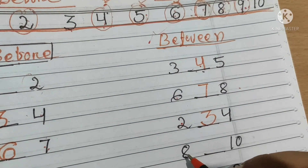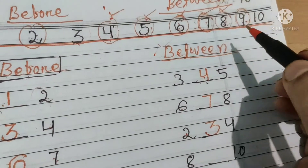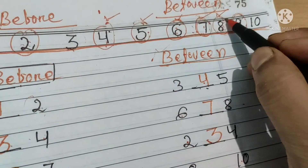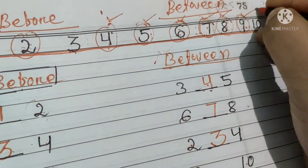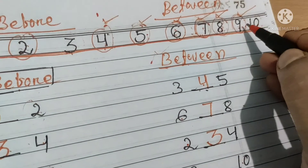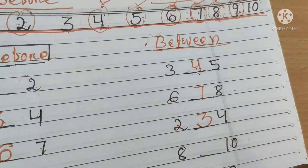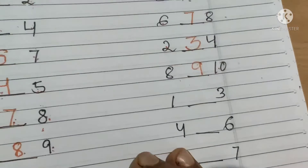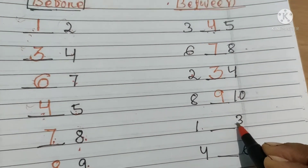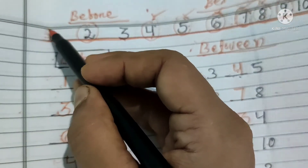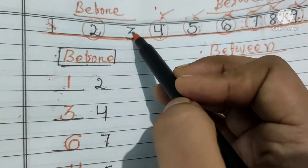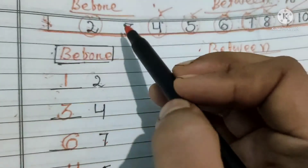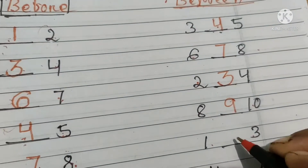Next one comes eight and ten. Chalou number line mein dekhte hain. Eight and ten. What comes between eight and ten? Number nine comes between eight and ten. So we will write number nine. Then comes one and three. What comes between number one and three? Number two comes between one and three. Haam kya likhenge? Number two.